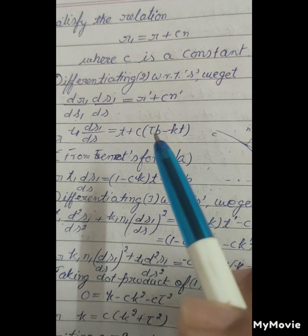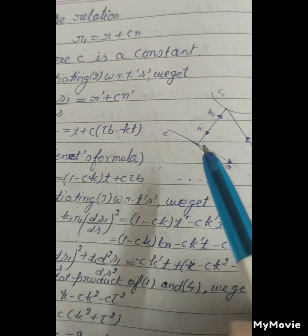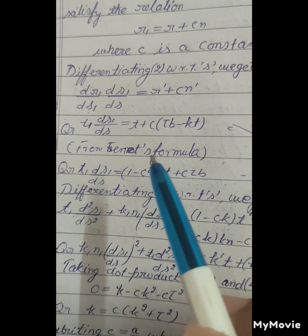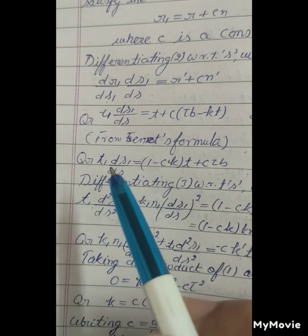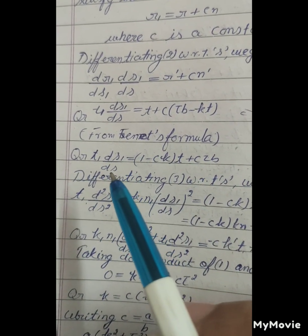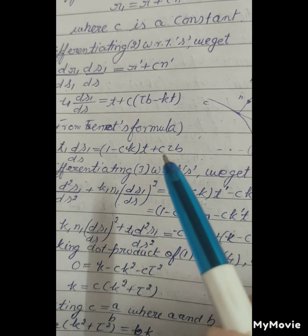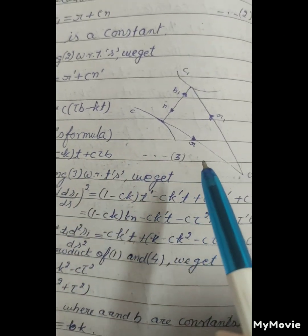t₁(ds₁/ds) = (1 - ck)t + cτb ... equation (3).